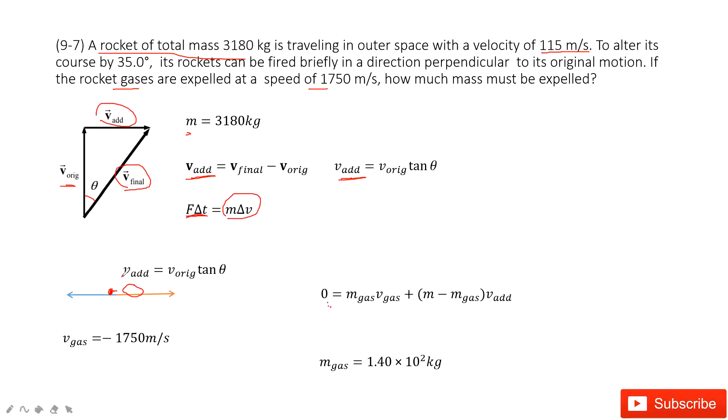And also, finally, the rocket just expels some gas out. So that means this rocket is separated into two parts. One part is m_gas times v_gas. This is the momentum from the gas. And also, the rest part is (m minus m_gas), this is the rest part of the rocket, times the velocity added. This is this part's momentum.